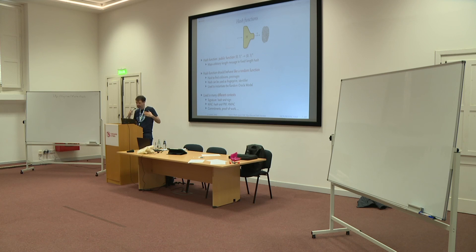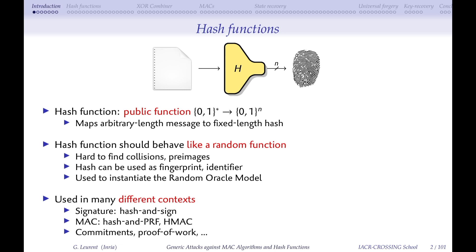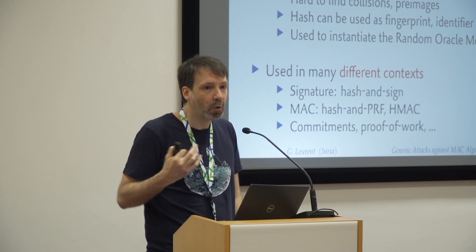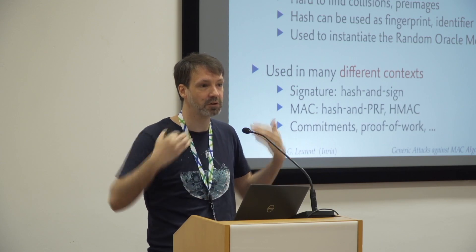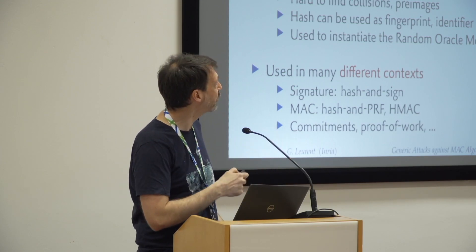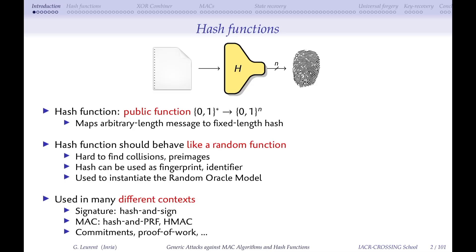A hash function is a public function that takes inputs of arbitrary length — an arbitrary bit string — and outputs a bit string of fixed length n. You want it to behave like a random function. If it really looks like a random function, it's very useful: it's hard to find collisions, hard to find pre-images. You can almost assume it's injective and use the output as a fingerprint of the input. For instance, if you want to sign a big document, you can just sign the hash instead.